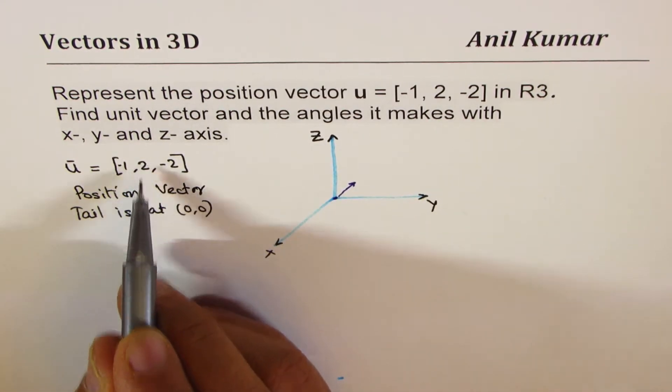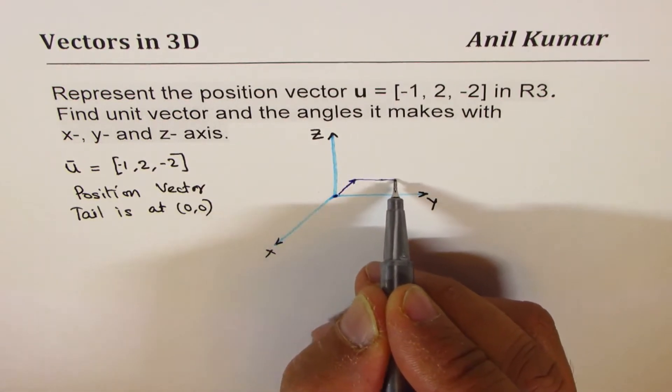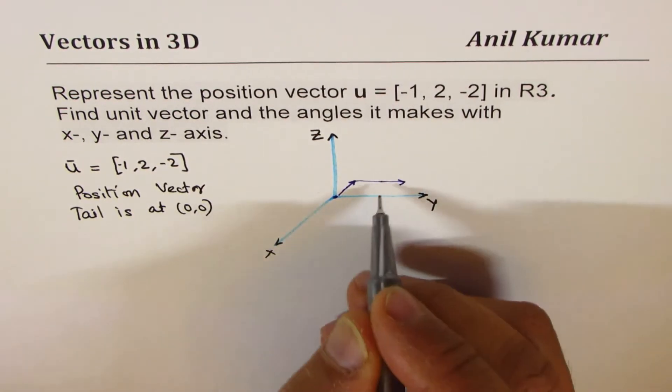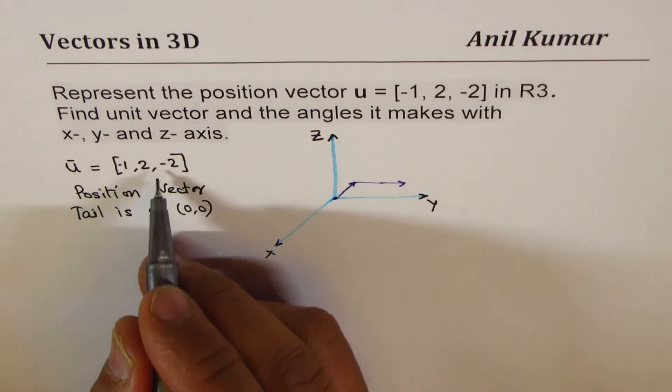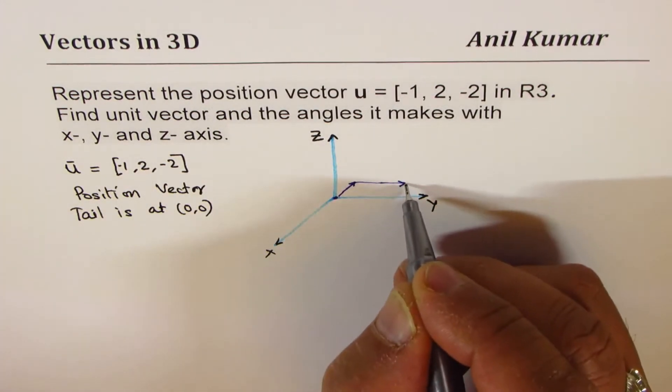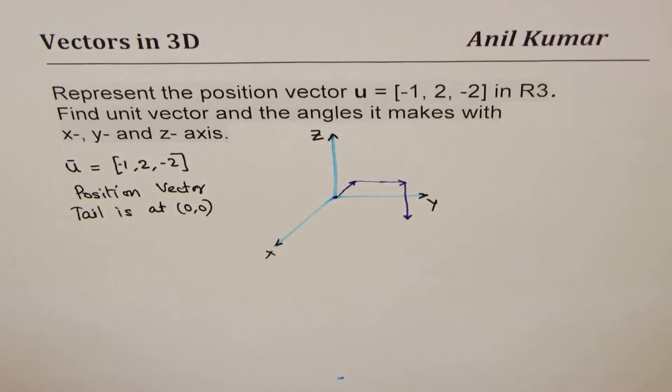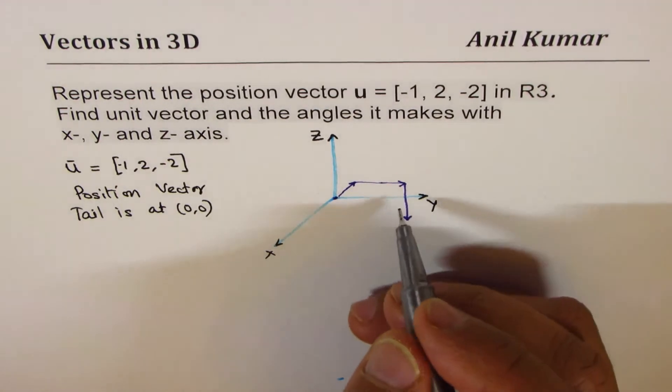2 positive along y. So we move in this direction 1 and 2. That is 2. And -2 along z means we have to go downwards. So it is 1 and 2. There you go. To give you a better picture, we can form a 3D figure.